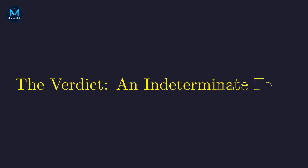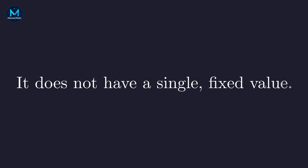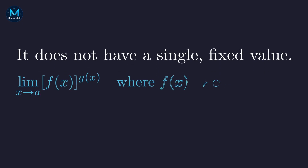When fundamental rules clash like this, the expression doesn't settle on a single value. Mathematicians call this an indeterminate form. There is no universal answer — the value depends entirely on context, specifically on the functions that are producing the infinity and the zero. To make sense of this, we need limits.